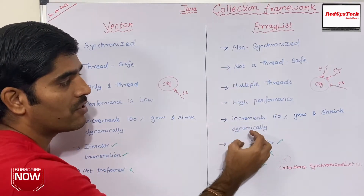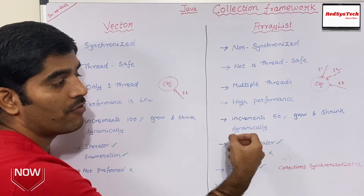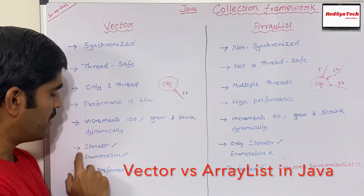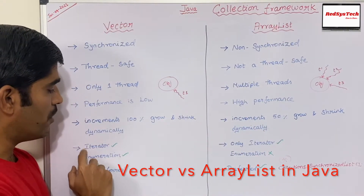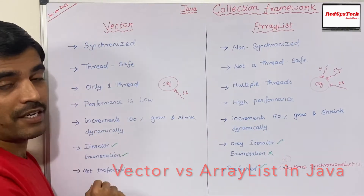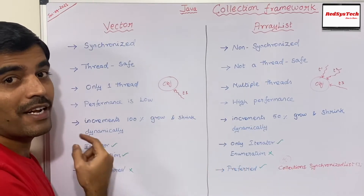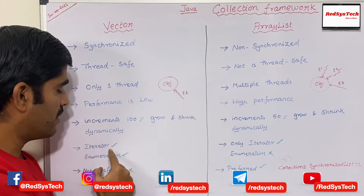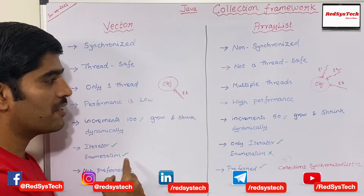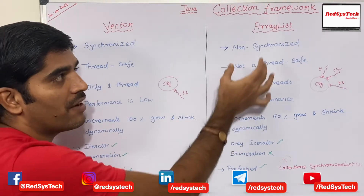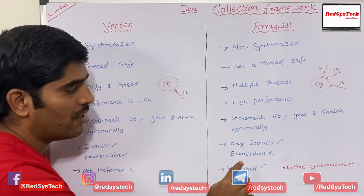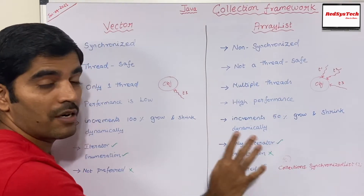In terms of iterating, both iterator and enumerator are possible with Vector. So Vector has the possibility of using iterator as well as enumeration. In the case of ArrayList, only iterator is possible — enumeration is not possible.